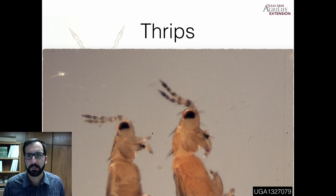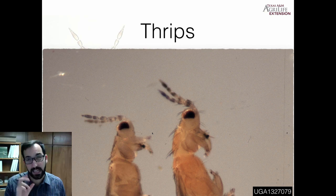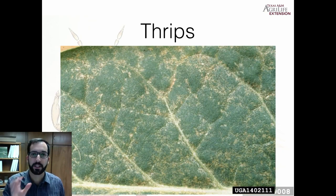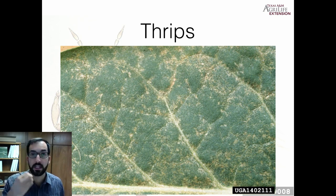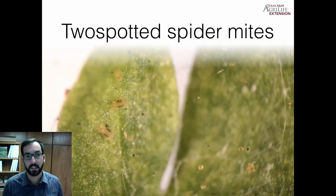Thrips have what's referred to as rasping mouthparts. So they're not quite sucking, but the damage looks a lot like sucking damage. You'll see this kind of stippling and discoloration, because they're feeding on the chlorophyll inside those leaves.